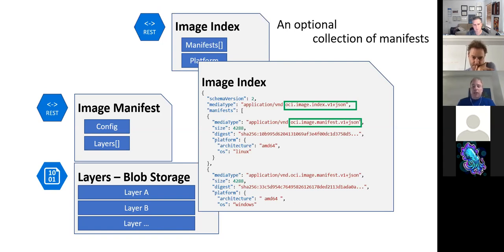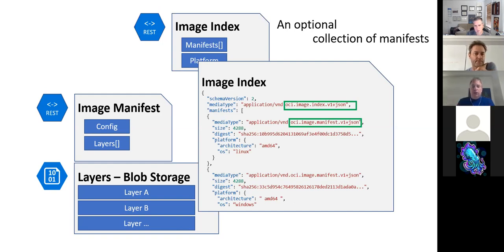Hopefully things on the surface — what end users running a million other things have in their heads — will be consistent. That's why I'd like it to be `helm push/pull`, not some generic `oci push/pull`. It should be as native to that project as possible, and all this internal complexity is just sausage.